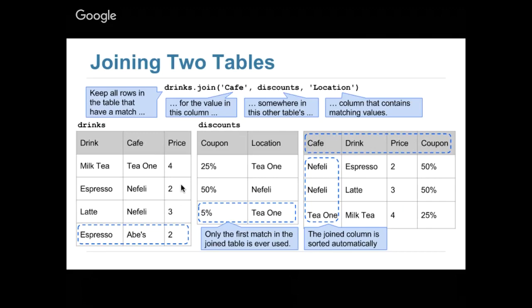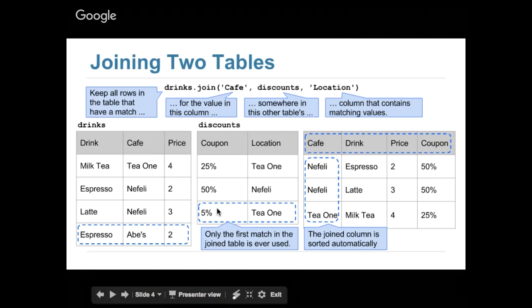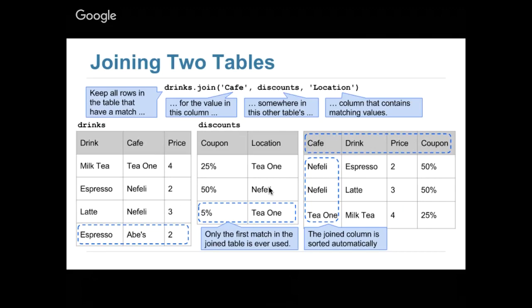Sean asks whether using only the first match seems problematic. Yes, it does — so usually when you join, you want to make sure you don't have duplicate entries. You'd want to group by location first and then take the max coupon, and then you can do a join safely without worrying about that duplication error. Good question.